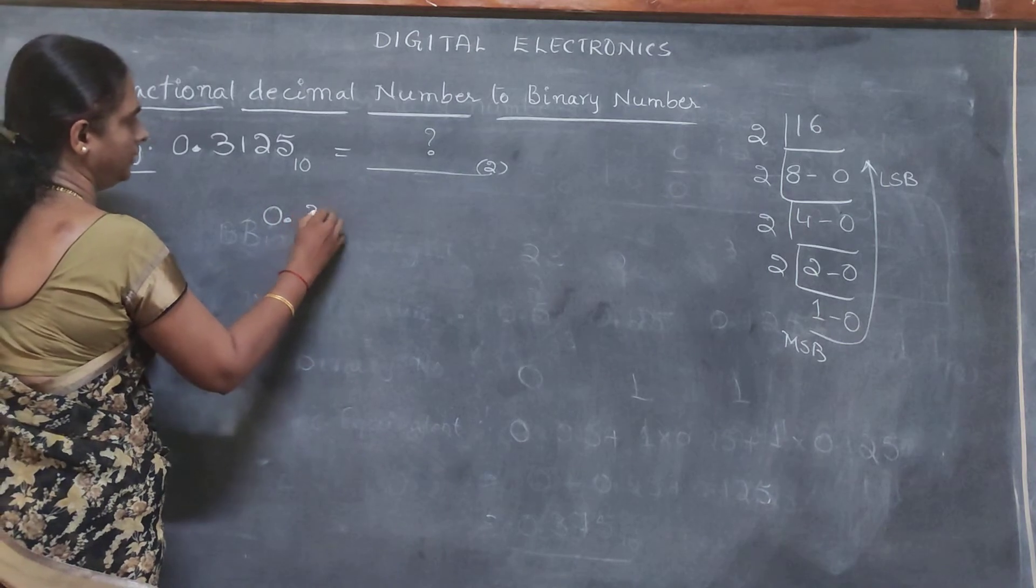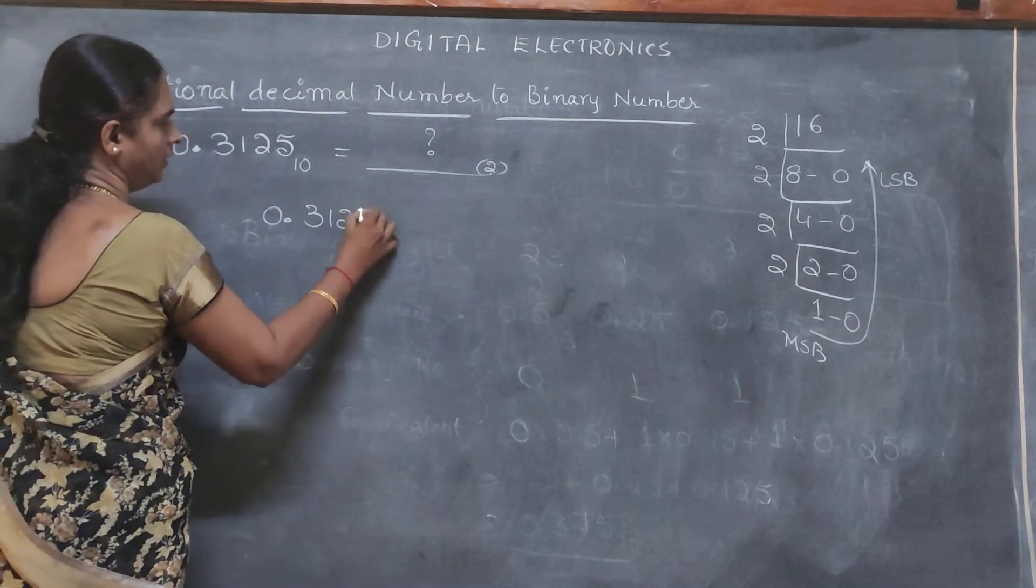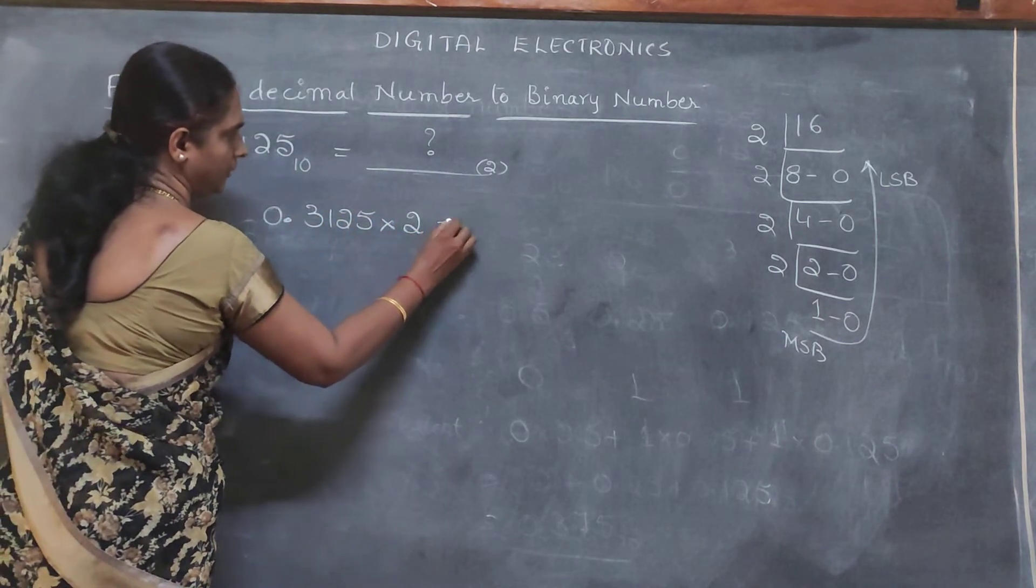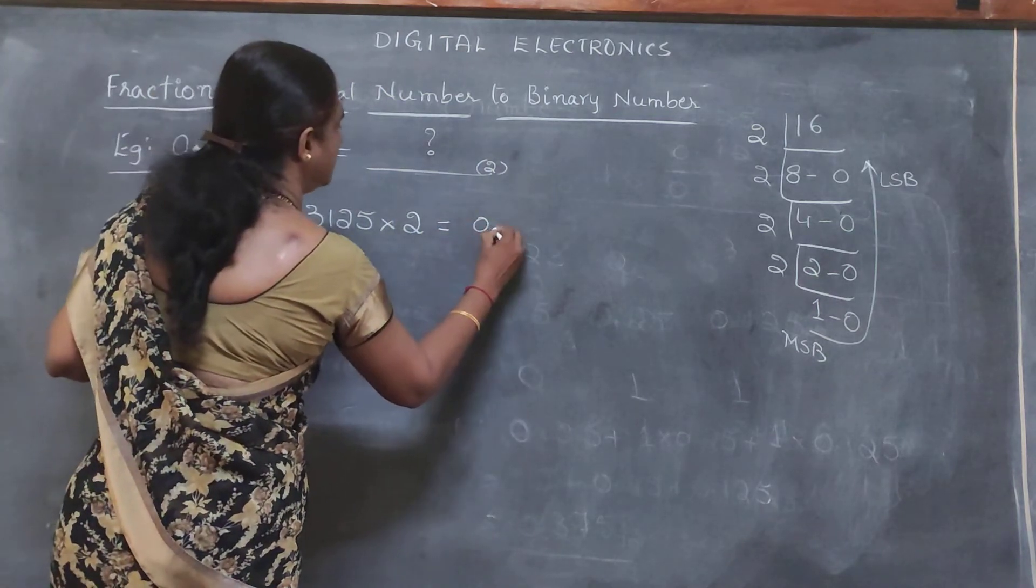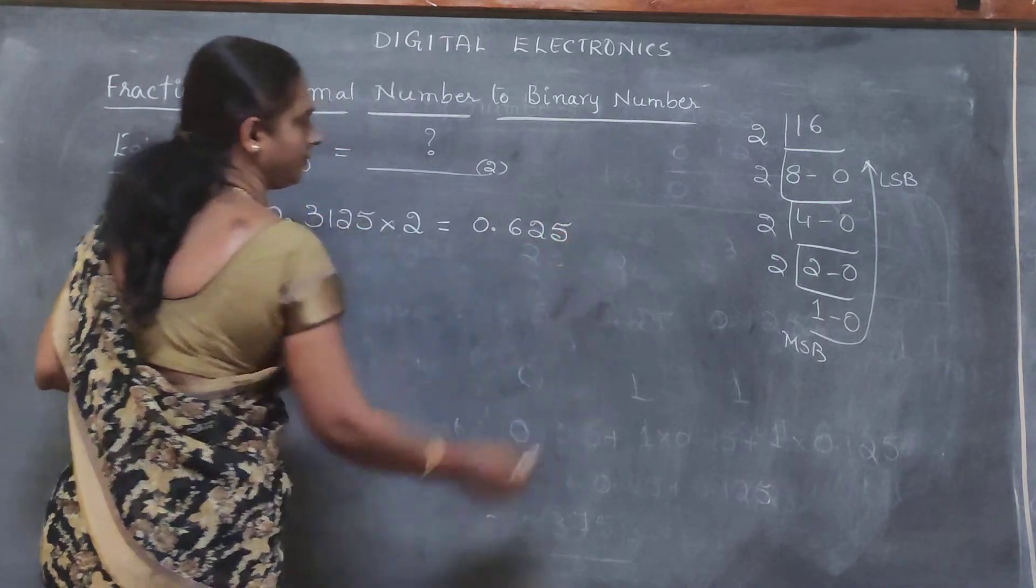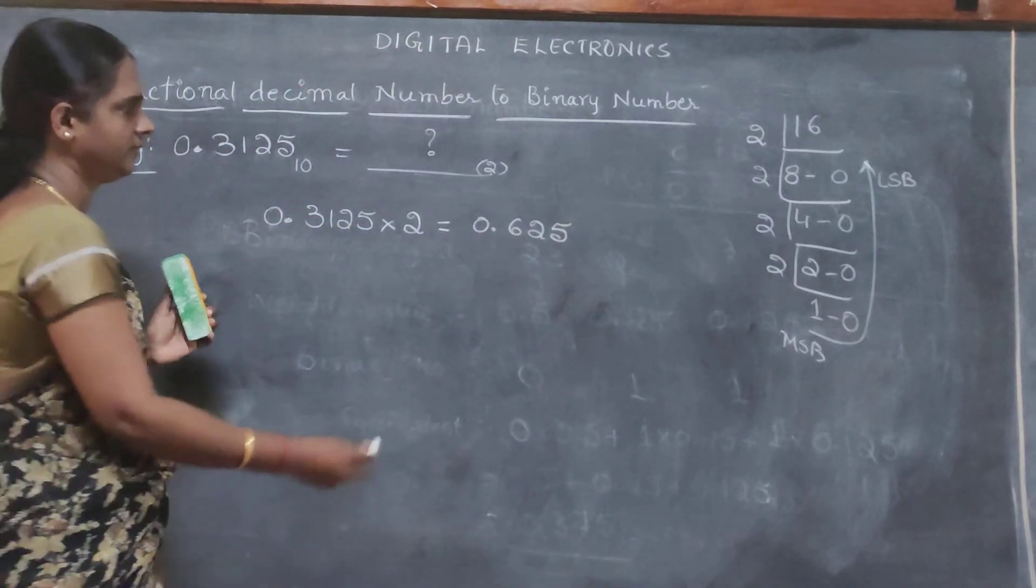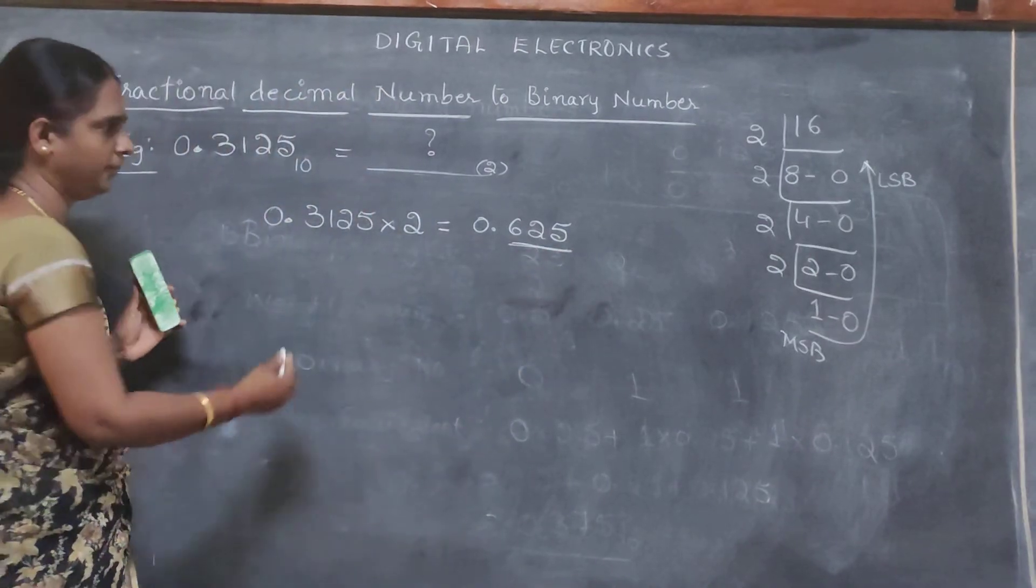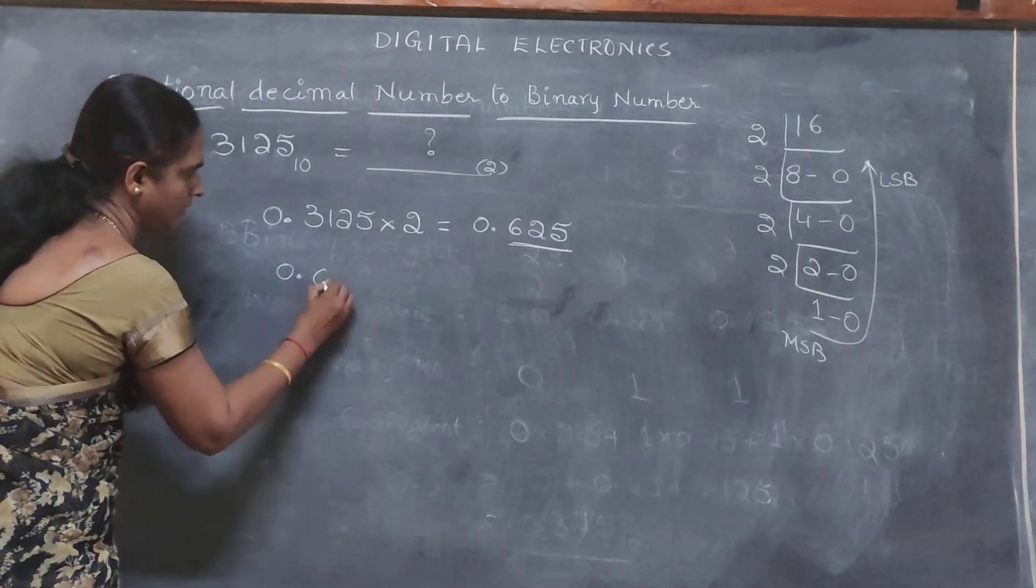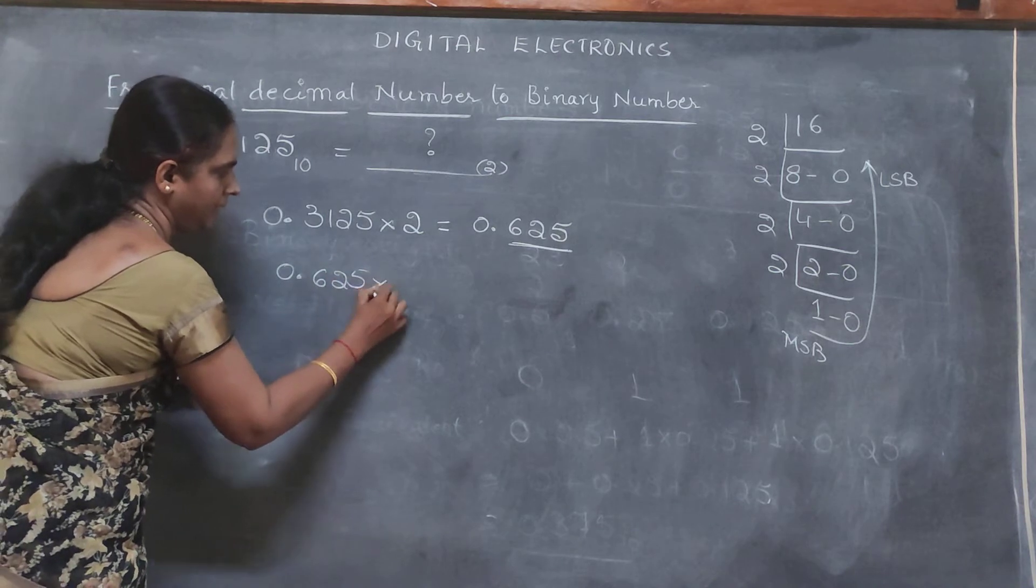What we have to do is multiply 0.3125 by 2, which is equal to 0.625. Next, take this fraction 0.625 and multiply it by 2.